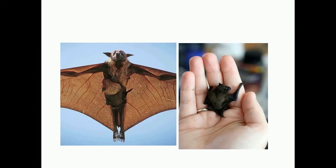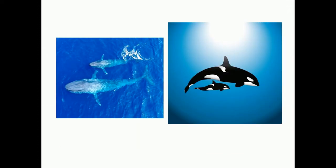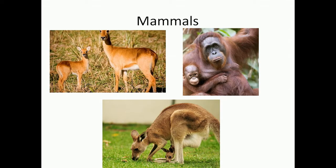Some other amazing mammals are also there which you may think are not mammals but they are. For example, the bat flies in the air and looks like a bird, but it is also a mammal. It is not a bird because it does not lay eggs and does not have feathers like birds — instead, it has fur. Another amazing mammals are dolphins and whales. They look like fish and live in the water, but they also give birth to young ones and feed their babies on their milk.